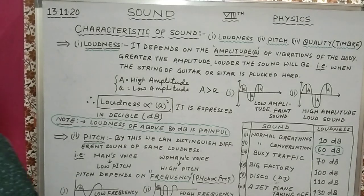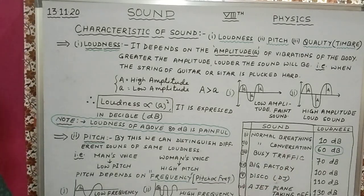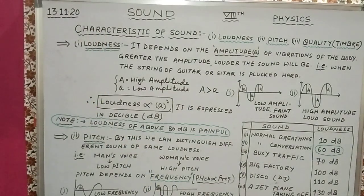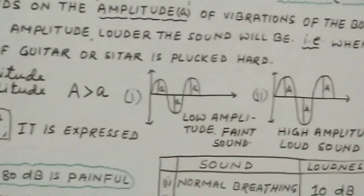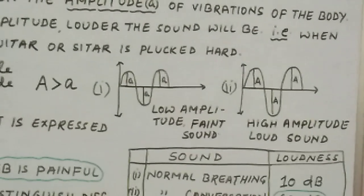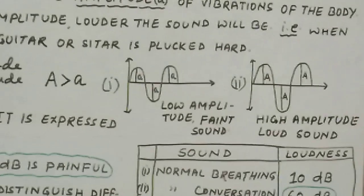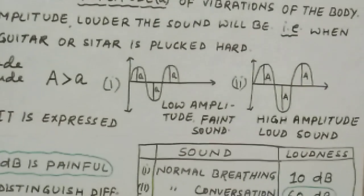Please go through this and try to understand. Also learn the decibel table — it is very important. Let me focus on the figures. These are the figures of low amplitude and high amplitude — faint sound and loud sound. You can clearly see that capital A represents greater amplitude, so high amplitude means loud sound, and low amplitude means soft sound.